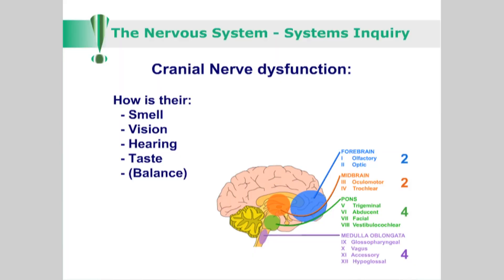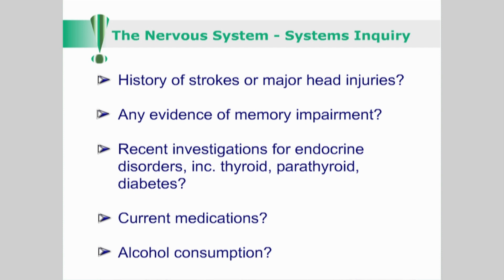If you have reason to believe that the patient's symptoms relate to the cranial nerves, ensure that you inquire about their sense of smell, vision, hearing and taste. Has the patient had any history of strokes or major head injuries? Is there any evidence of memory impairment? Has the patient had any recent investigations for possible endocrine disorders, including thyroid and parathyroid conditions or diabetes? Ascertain what medications they are taking and how much alcohol they might be consuming.